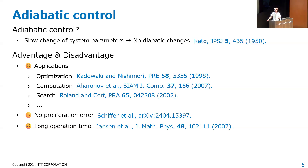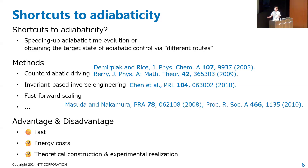However, adiabatic control requires long operation time to satisfy the adiabatic condition. Algorithms which require long operation time suffer from decoherence. So, we would like to speed up this adiabatic control. Shortcut to adiabaticity is a method which enables us to speed up adiabatic time evolution, or to obtain the target state of adiabatic control passing through non-adiabatic dynamics. There are several methods, but three are most famous.